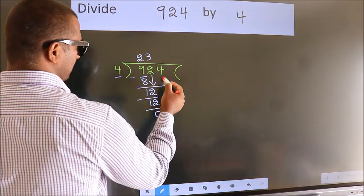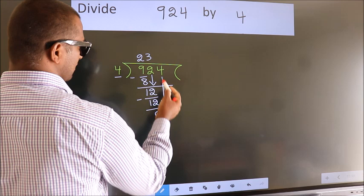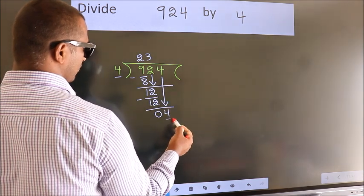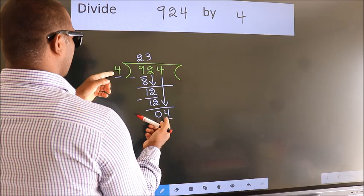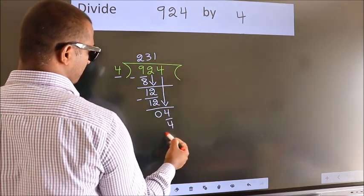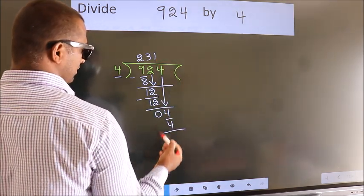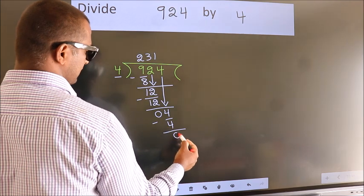After this, bring down the beside number. So, 4 down. So, 4. When do we get 4? In 4 table. 4 once, 4. Now, we subtract. We get 0.